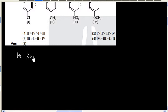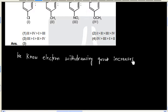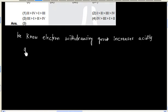We know electron withdrawing group increases acidity and electron donating group decreases acidity.